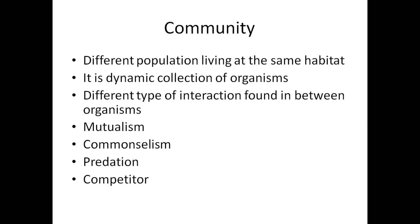Within a community, interactions occur between species. One type of relationship is mutualism, in which both organisms are benefited. There is also commensalism. Another type is the predator-prey relationship, where one organism hunts and kills another.